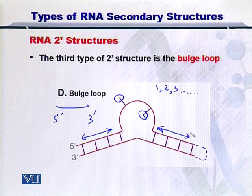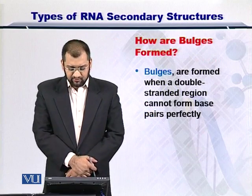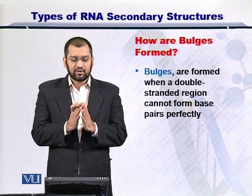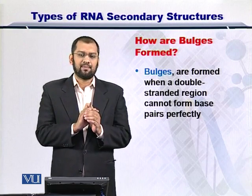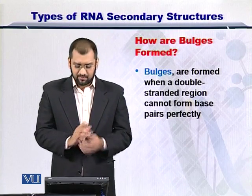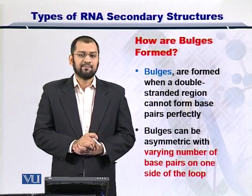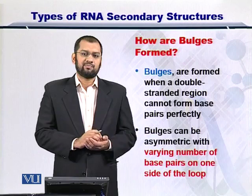So it all depends on how many nucleotide bases are present and are unpaired in the RNA structure. To summarize, bulges are formed when the double-stranded region of an RNA molecule cannot bond perfectly and some nucleotide bases are left uncoupled, appearing like a bulge. The bulges can be asymmetric depending on the number of nucleotide bases that are uncoupled for that specific bulge.